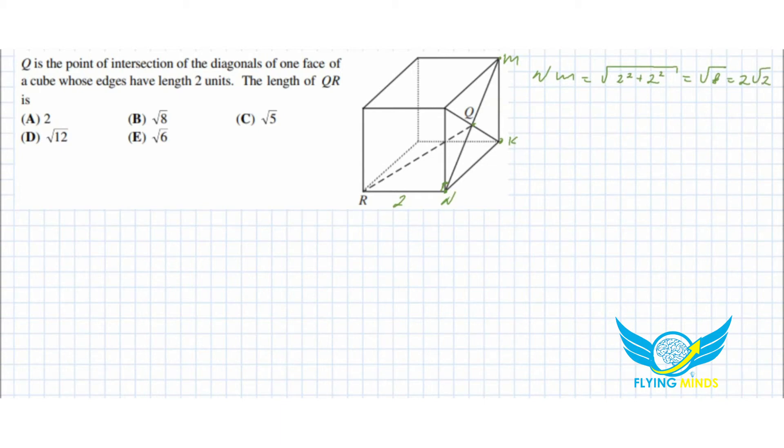From here, NQ equals to two square root of two divided by two equals to square root of two. NQ is square root of two.